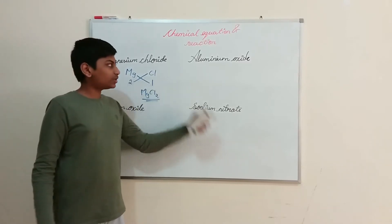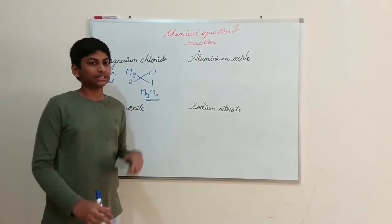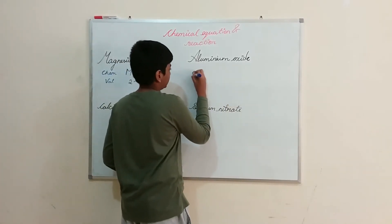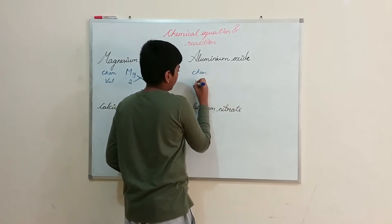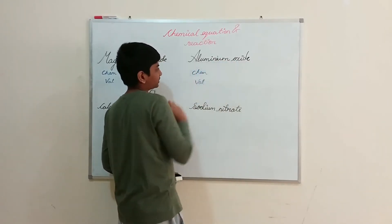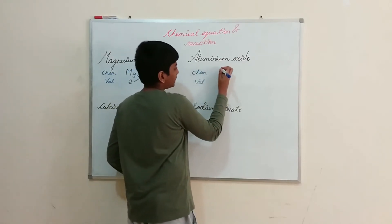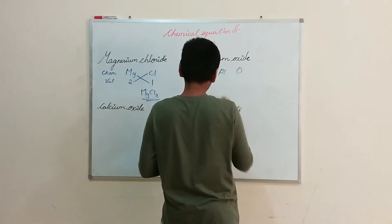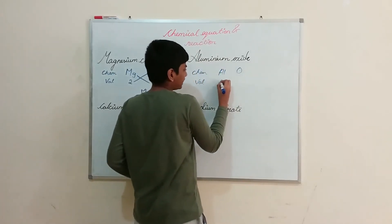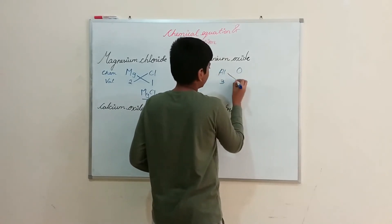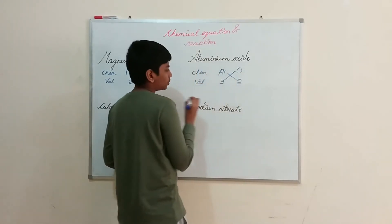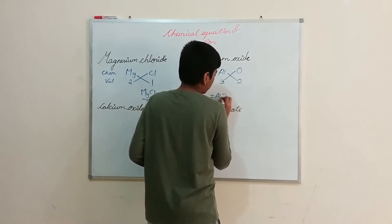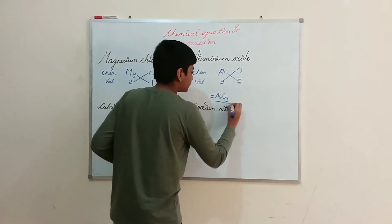Aluminium oxide: write Al and O, with valencies — aluminium is 3 and oxygen is 2. Cross multiply them and we get Al₂O₃. This is aluminium oxide. Now calcium oxide: calcium is Ca and oxide is oxygen, O. Calcium's valency is 2 and oxygen's valency is also 2. Cross multiplying gives Ca₂O₂.